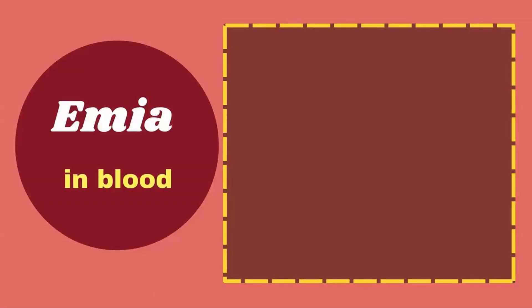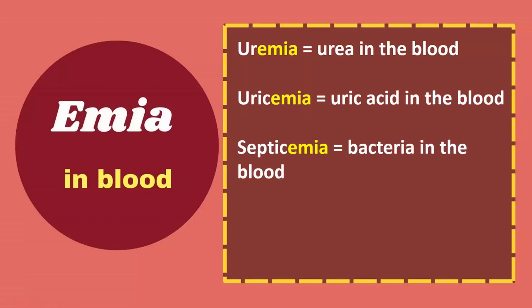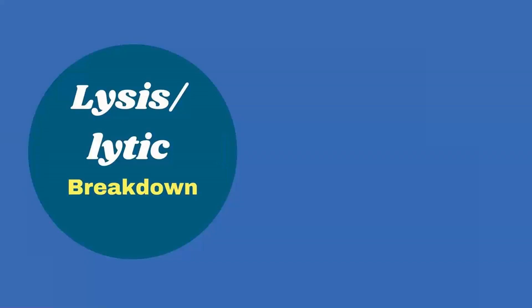Next, suffix emia refers to in the blood. Examples: uremia is urea in the blood, uricemia is uric acid in the blood, septicemia is bacteria in the blood, ischemia is low oxygen in the blood circulation.